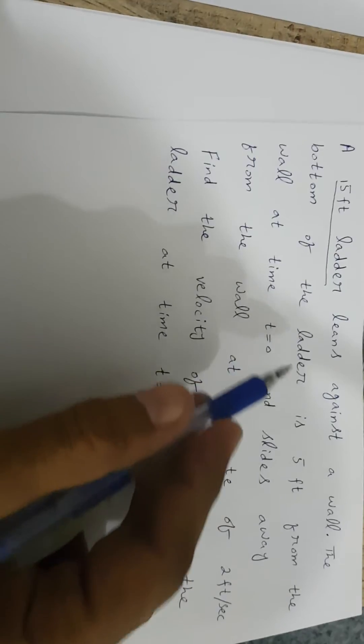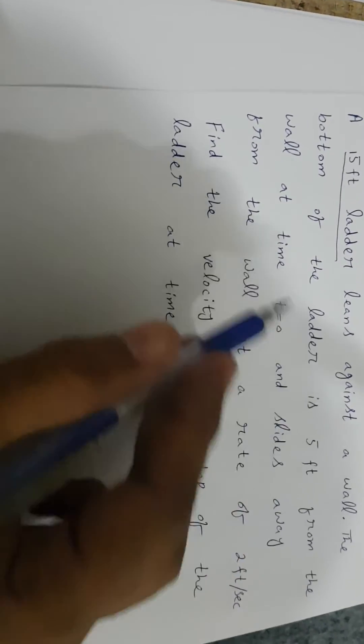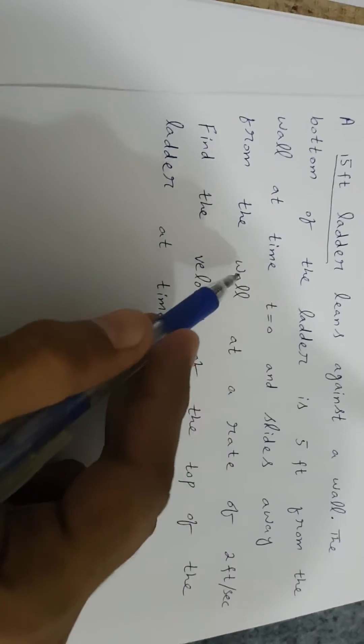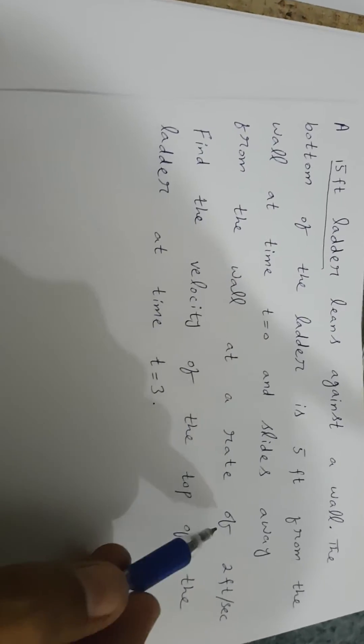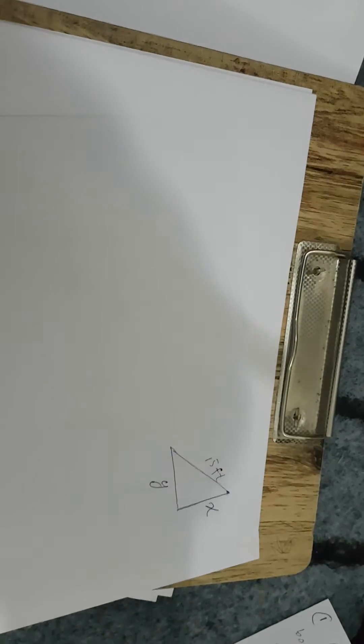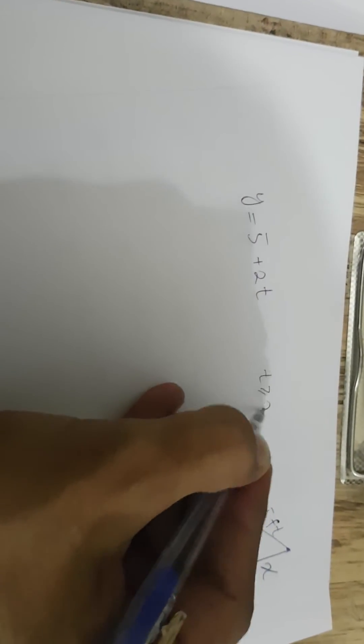The length of the ladder is 15 feet, and the bottom of the ladder, which is Y, is 5 feet from the wall at time t equals 0. After t equals 0, it is increasing at a rate of 2 feet per second. So Y should be 5 plus 2t for t greater than or equal to 0.